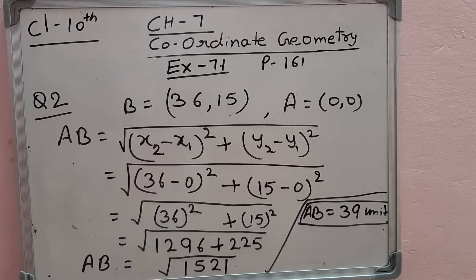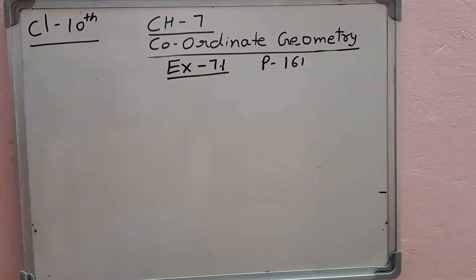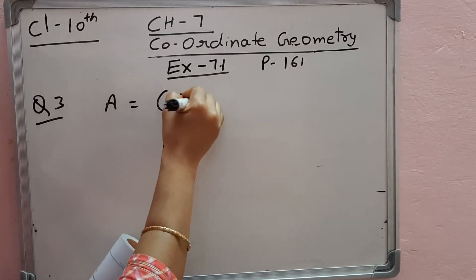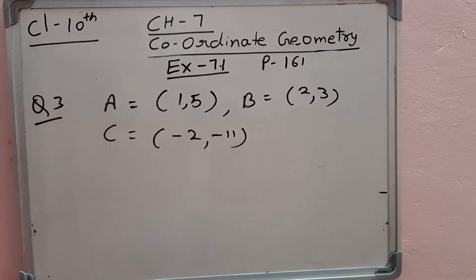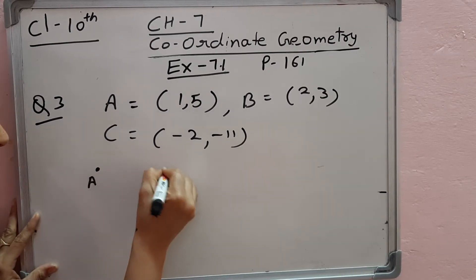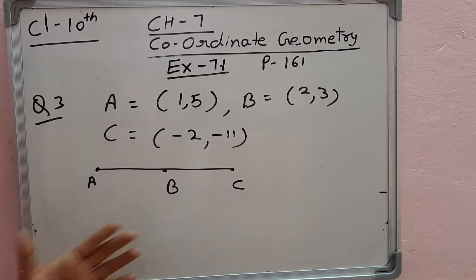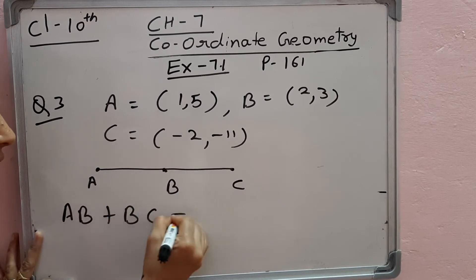Now question number 3. In question number 3: determine if the points (1, 5), (2, 3), and (-2, -11) are collinear. So 3 points are given: A is (1, 5), B is (2, 3), and C is (-2, -11). You can check by condition whether these points are collinear or not. Collinear means A point, B point, and C point lie on a straight line. Then we say these points are collinear. The condition is: AB plus BC is equal to AC.